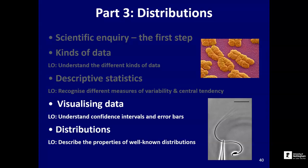Welcome back. This is the third and final part of our lecture on exploring data in the experimental design and analysis section of core skills. In this final part, we're going to look again at distributions and how we can use the properties of distributions to put confidence intervals on our estimates of measures of central tendency — the mean in particular — which gives rise to the idea of putting error bars on a graph. Then we'll look at some common distributions encountered in the life sciences.